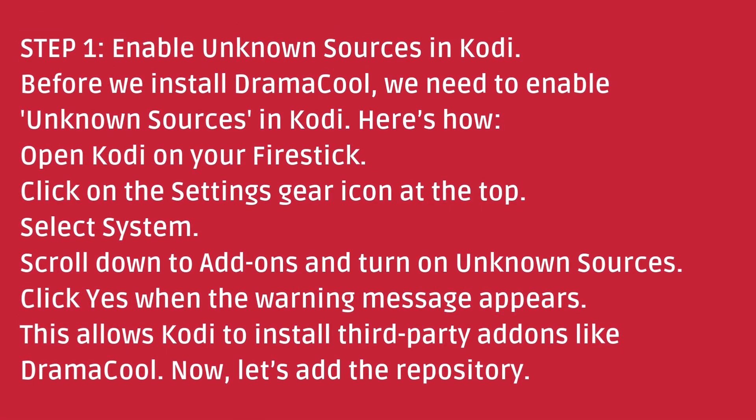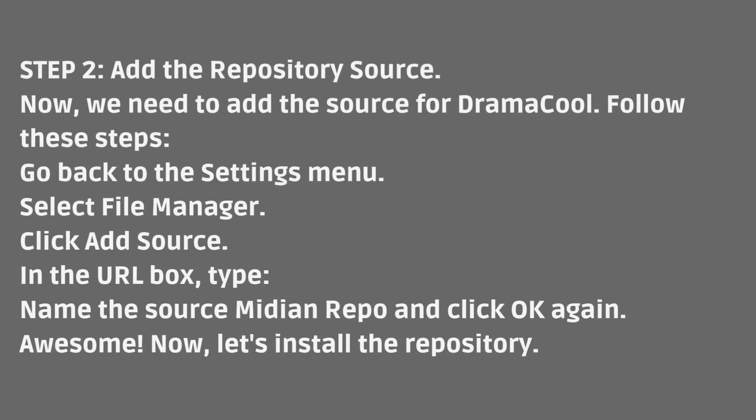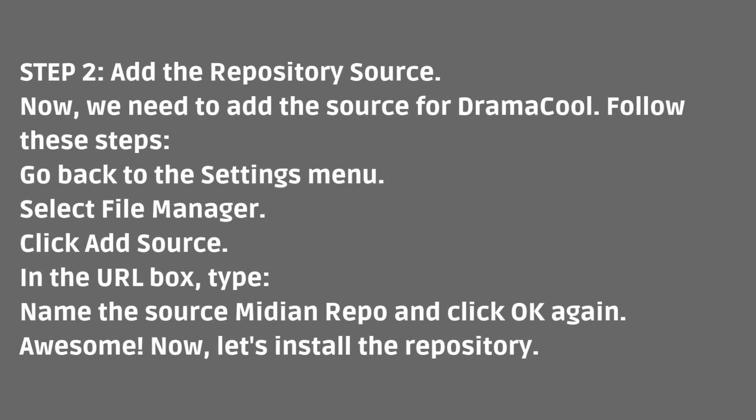Now let's add the repository. Step 2: Add the Repository Source. Now we need to add the source for Dramacool. Follow these steps: Go back to the Settings menu. Select File Manager. Click Add Source. In the URL box, type the URL. Name the source Midian Repo and click OK again. Awesome! Now let's install the repository.